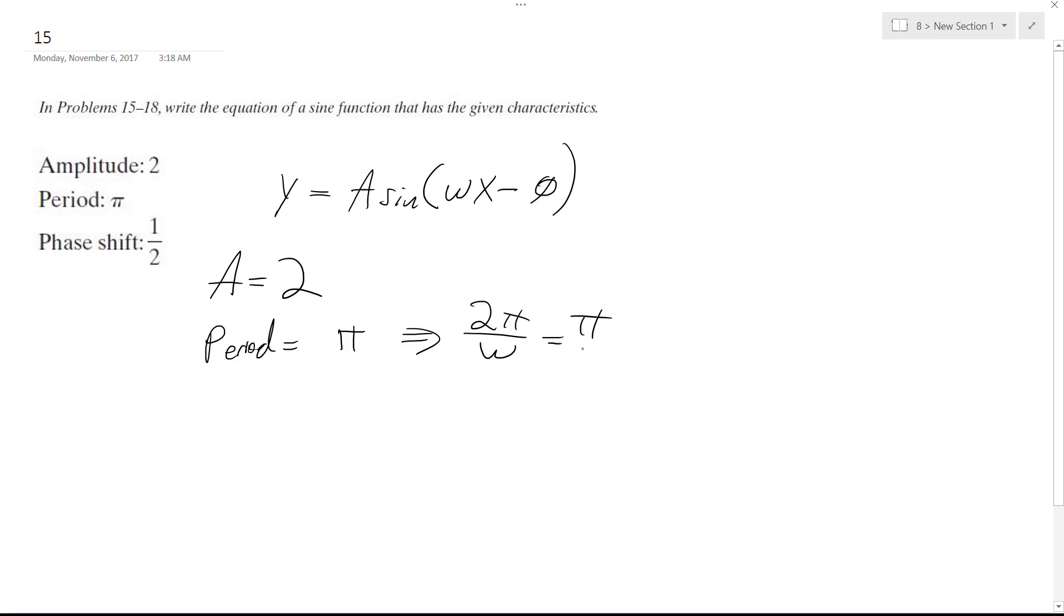So if you solve for this, what you end up with is: 2 pi equals pi omega divided by pi, and you get this equal to 2.